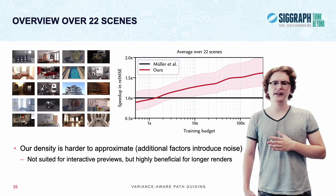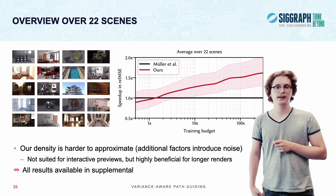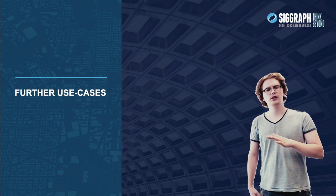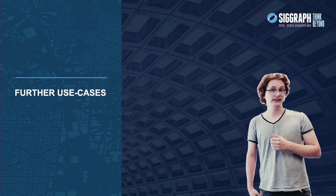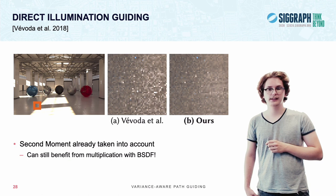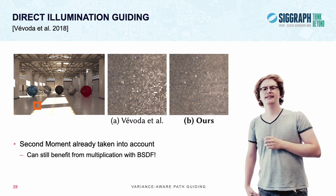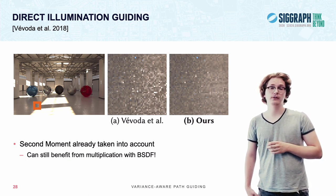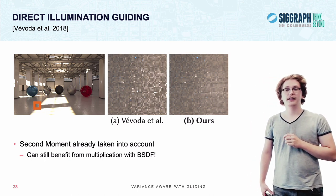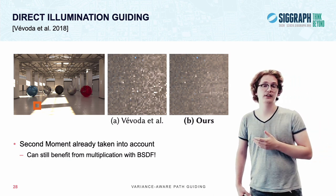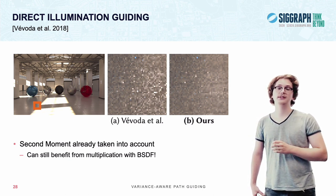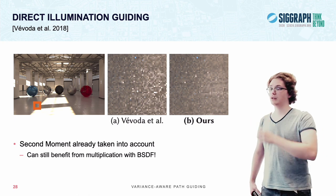Now, you can find all of the results in our supplemental material. But we've also evaluated some further use cases, which I'd like to shortly go over. Starting with direct illumination guiding in the method proposed by Vivoda and colleagues. Now, this method already takes second moment into account when selecting light sources. However, we have shown that by also incorporating the BSDF and cosine, like we do in our distribution, we are actually able to improve performance even further, especially on glossy surfaces.